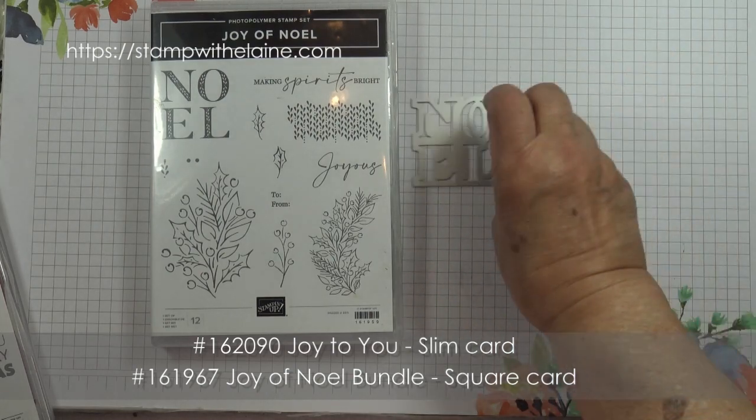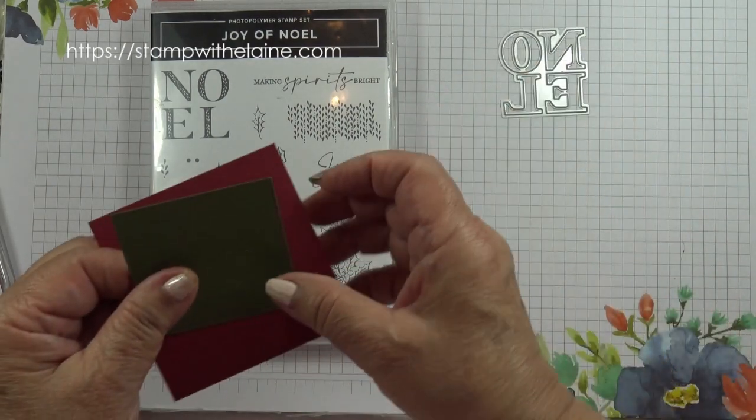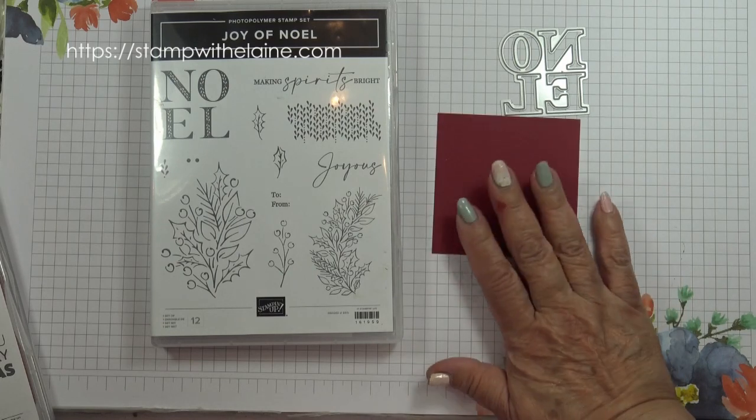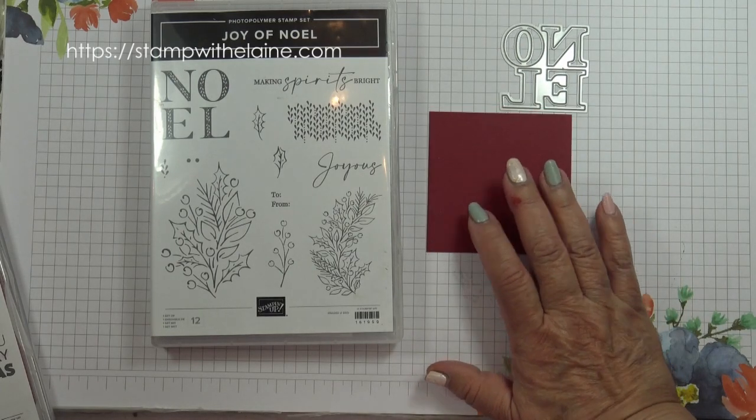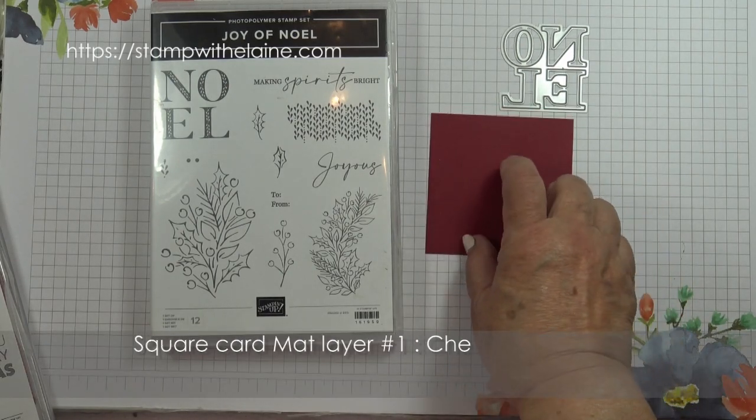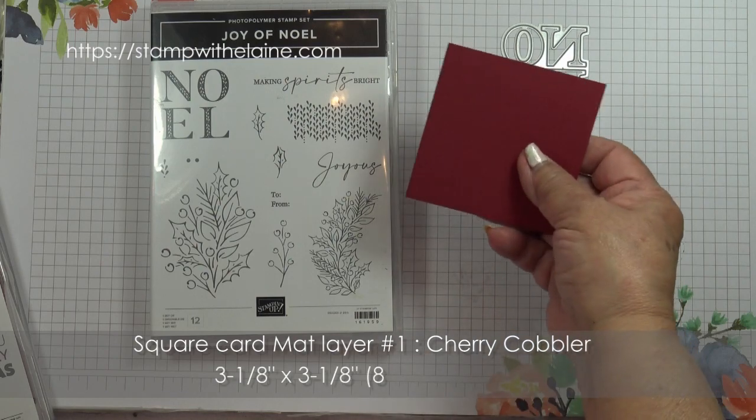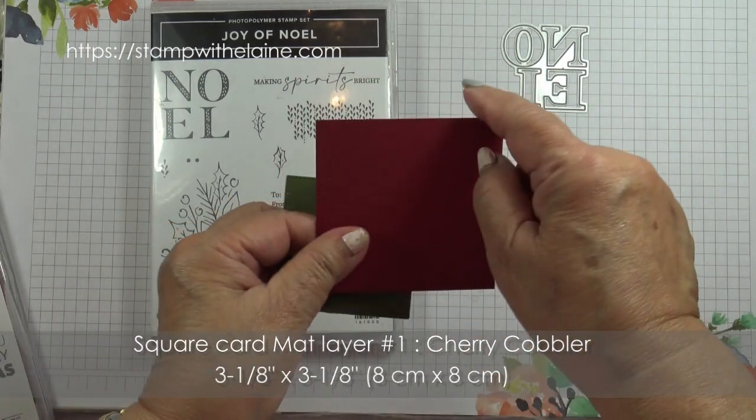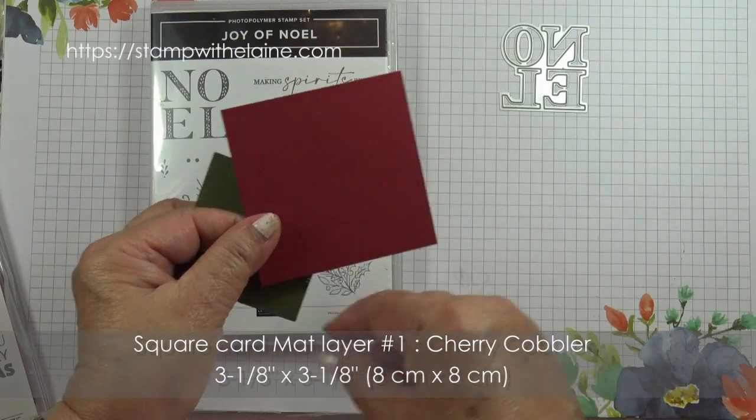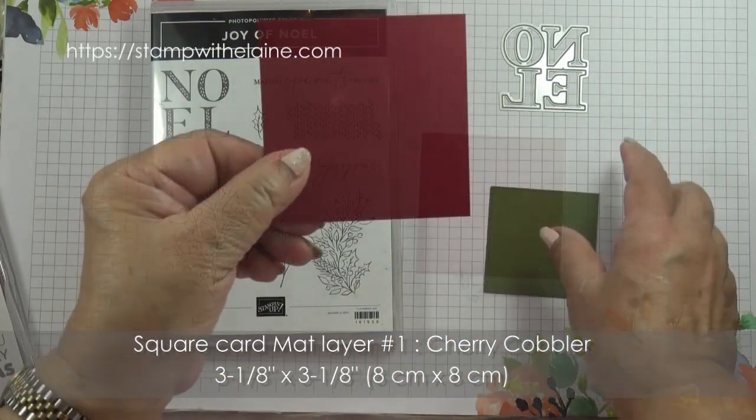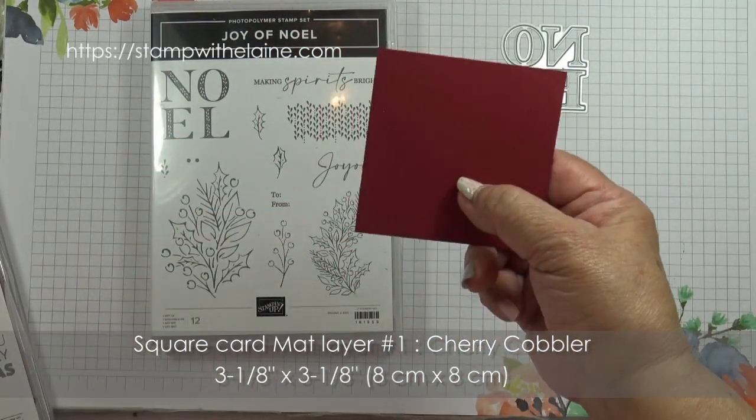And you need a mat layer in Cherry Cobbler, an eighth of an inch larger than the Designer Series paper. So this is three and one eighth by three and one eighth, and in metric that will be eight by eight centimeters.